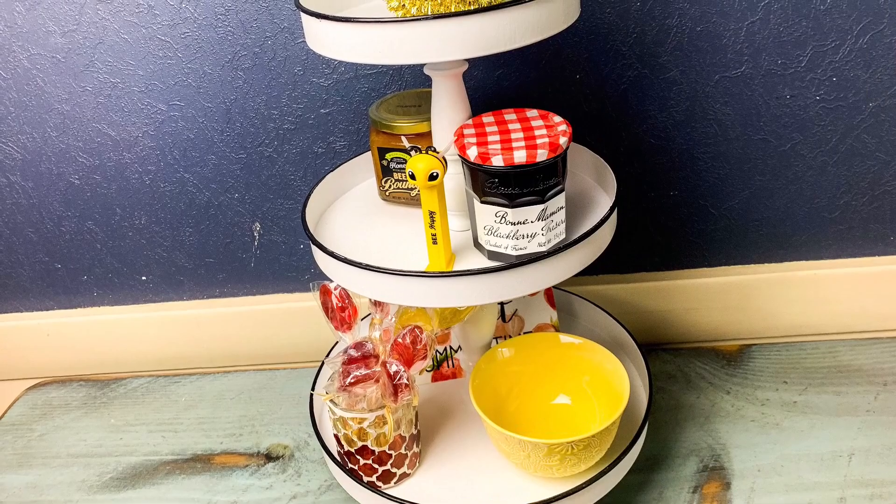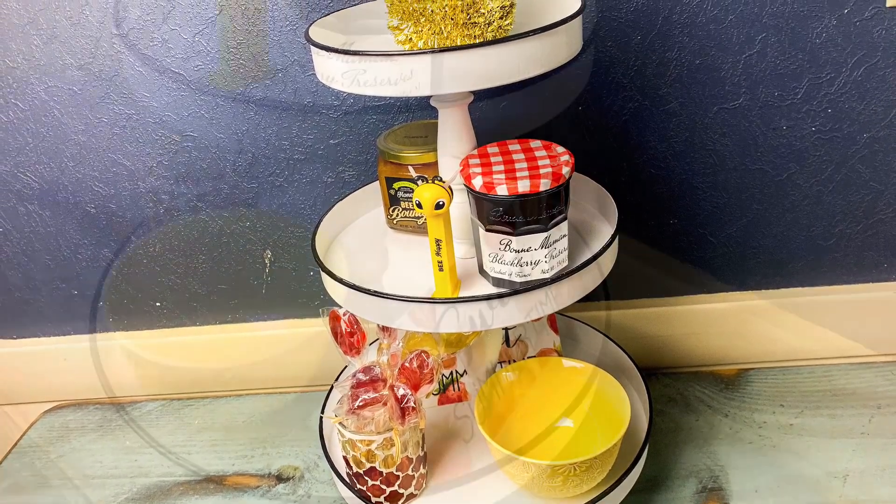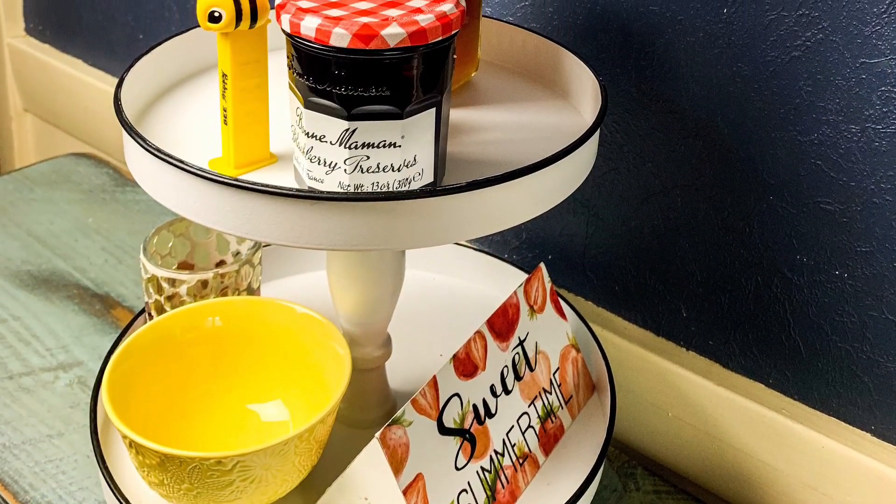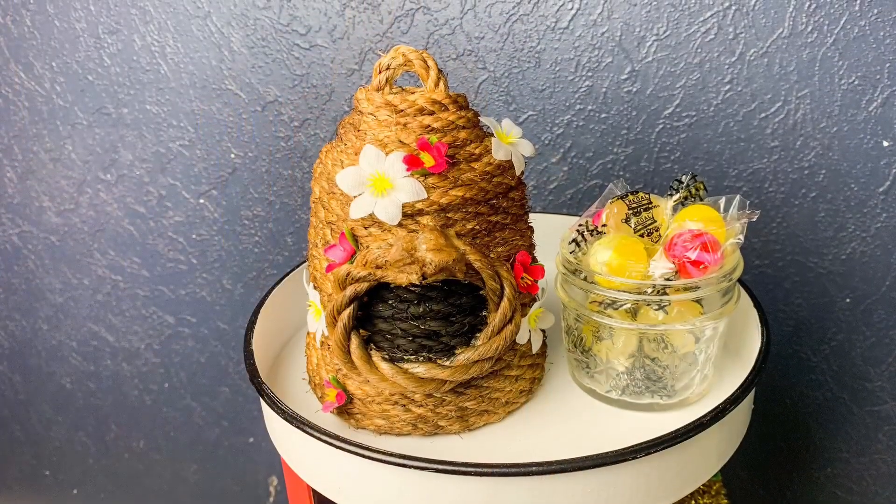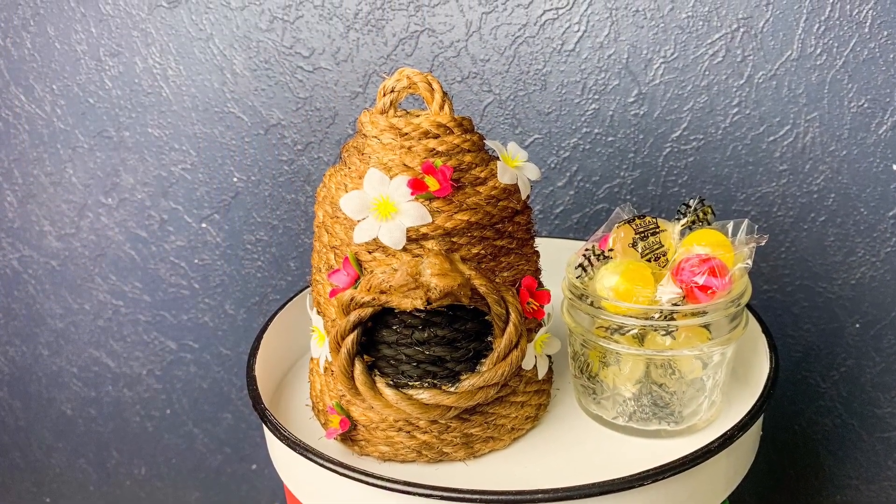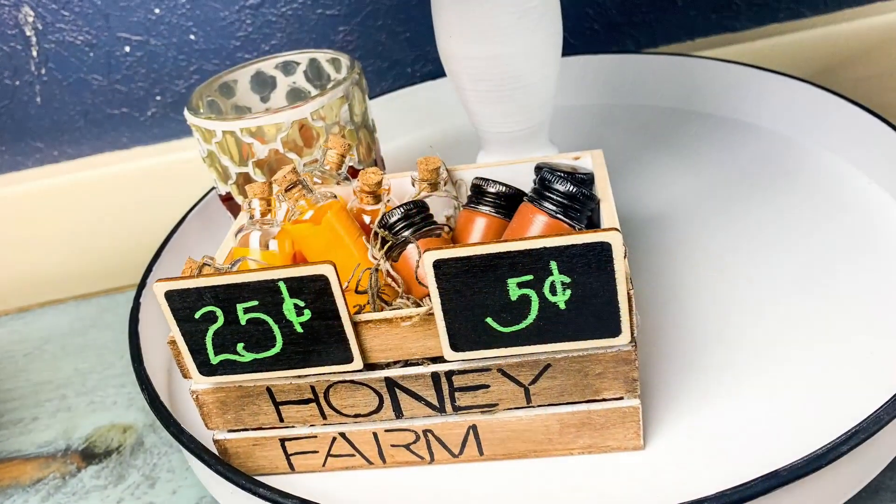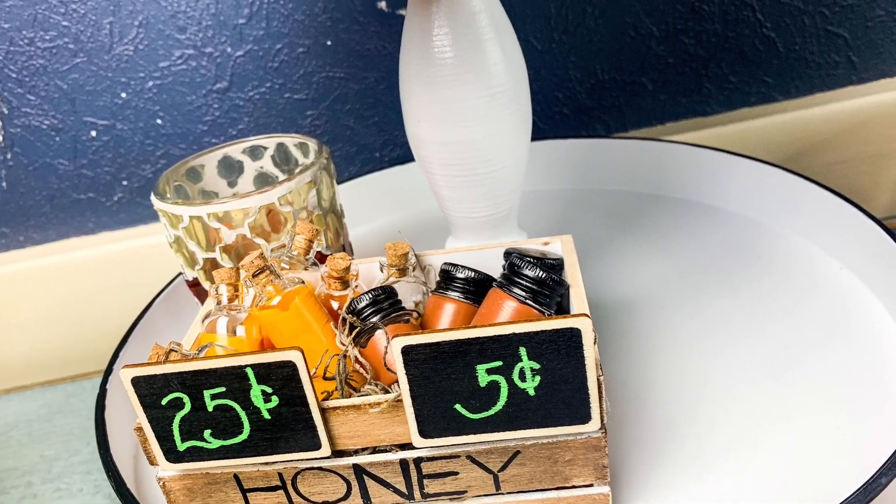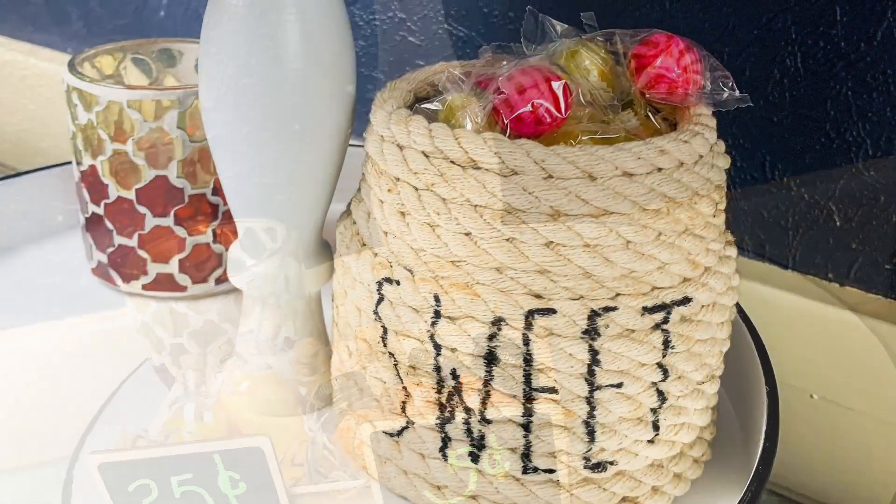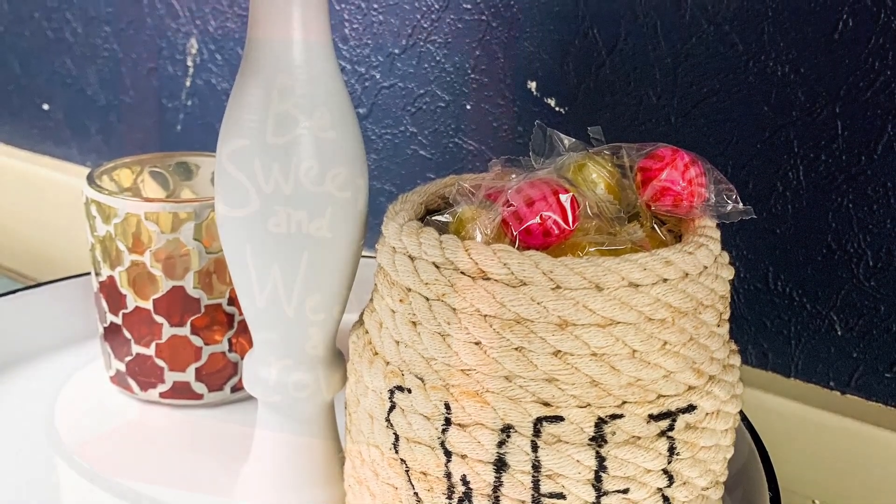As you can see I started out with some random stuff I had at my house just to match the tiered tray: some jellies, honey, honey spoons, and candies to fill up the empty spaces. I started assembling and moving things around where I thought it would look cute.